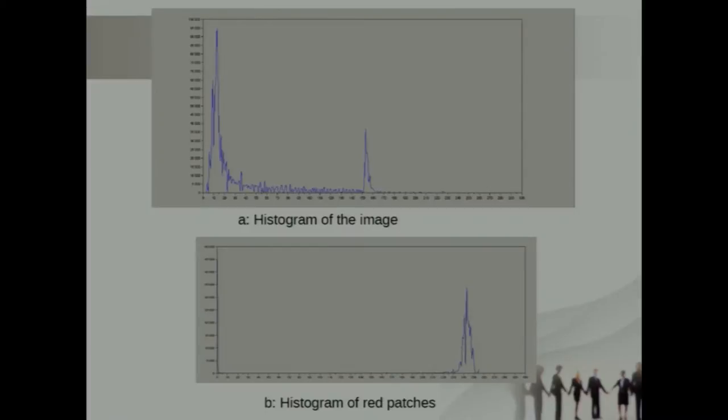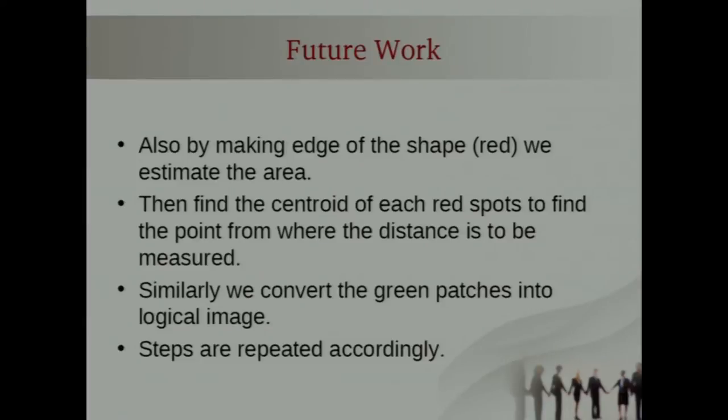This was the inversion and this was the histogram from where we use the threshold value. The starting one is the histogram of the whole image and the second one represents the histogram of only the red particles. This 200 value we took it as a threshold and we made this logical image. After using this the edge of the shape of the red patches, they can estimate the area and with that we can find the centroid of each red spot, to find the point where the distance is to be measured.